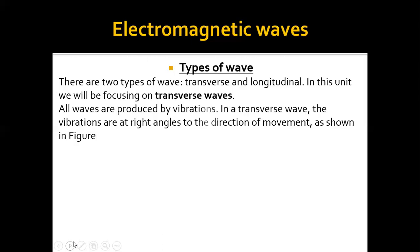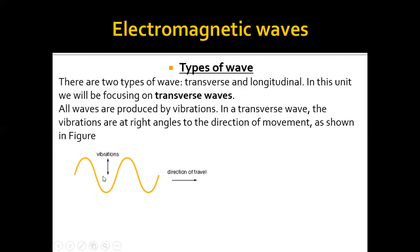What do transverse waves mean? Remember, waves are produced by vibrations. In transverse waves, the vibrations are at a right angle to the direction of movement. As you can see, the direction of vibration and the direction of the wave are at a 90-degree right angle, and they travel from left to right. These waves are called transverse waves.